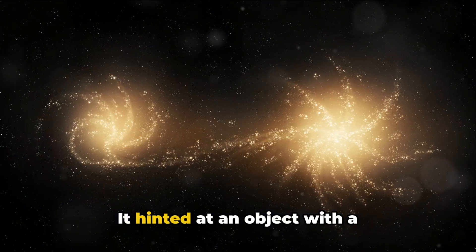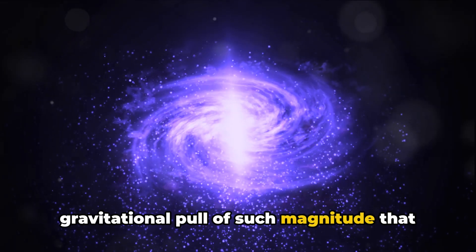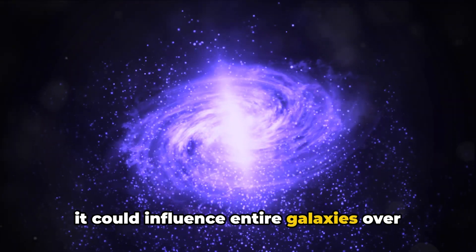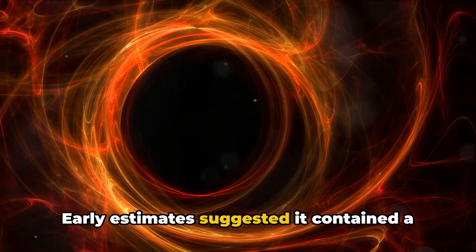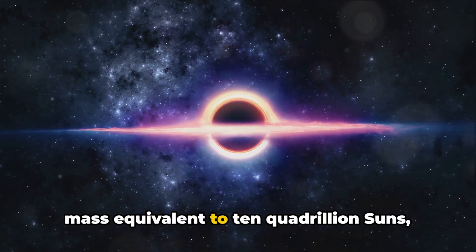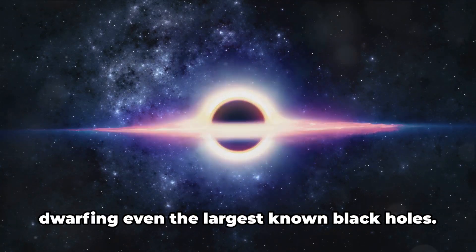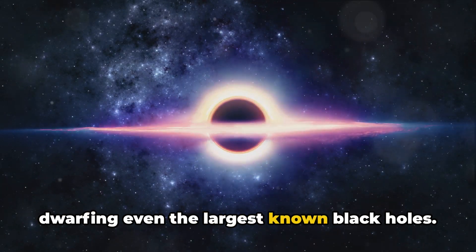The Great Attractor's mere existence was perplexing. It hinted at an object with a gravitational pull of such magnitude that it could influence entire galaxies over vast distances. Early estimates suggested it contained a mass equivalent to 10 quadrillion suns, dwarfing even the largest known black holes.